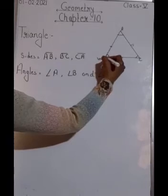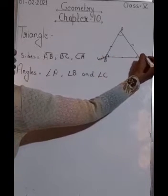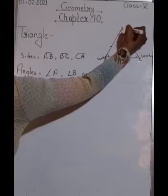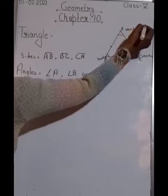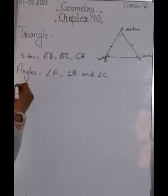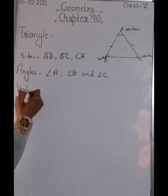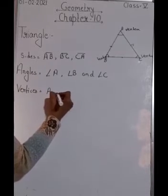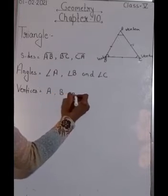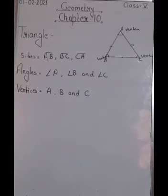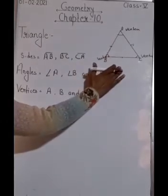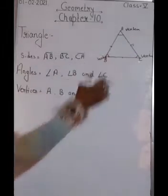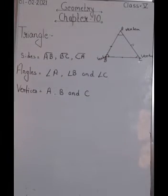A triangle has three vertices. So a triangle is a three-sided polygon having three sides, three angles, and three vertices — named A, B, and C.